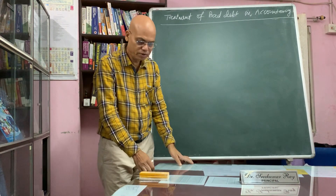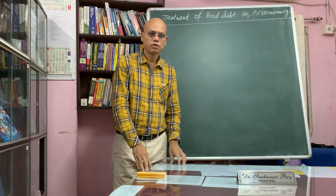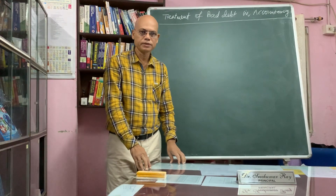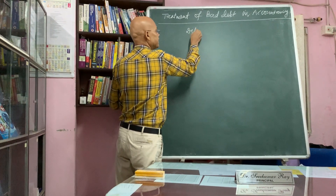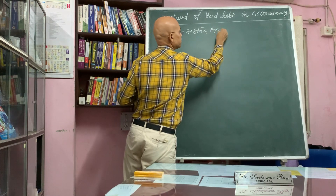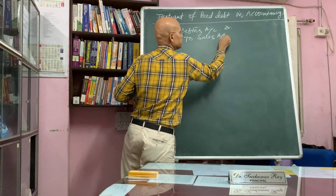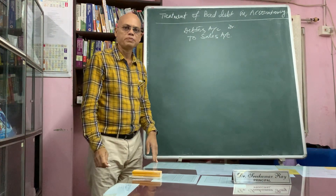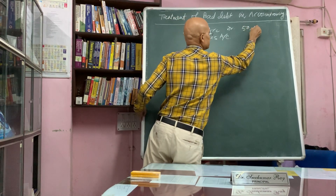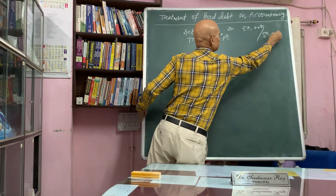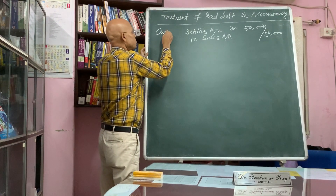In business, credit purchases and sales are very common. When goods are sold on credit, the entry passed is: debtors account debit to sales account. Suppose 50,000 worth of goods are sold, then 50,000 debtors account debit to sales account. The debtors account is also known as the customers account.